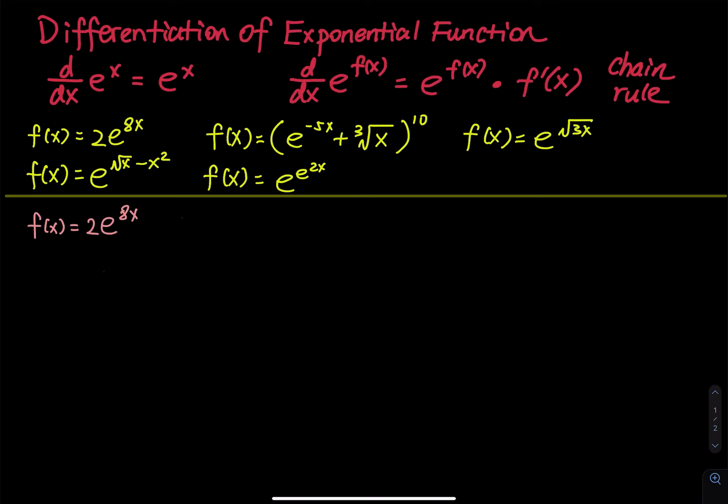The exponential function e to the x has the easiest differentiation formula. The derivative of e to the x is e to the x. So if you keep taking the derivative of e to the x, you just get e to the x. The second derivative is e to the x, the third derivative is e to the x, the fourth derivative is e to the x.